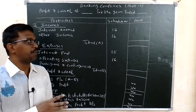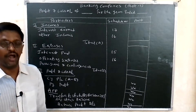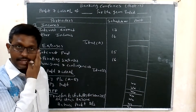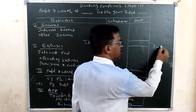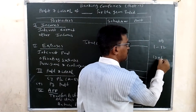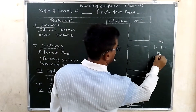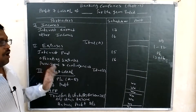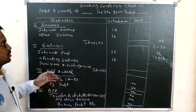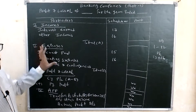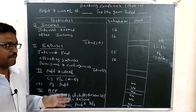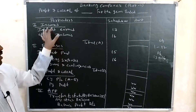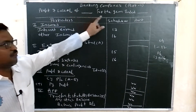For banking companies, final accounts are prepared in two parts: the profit and loss account and the balance sheet. They are presented schedule-wise. Schedule 1 to Schedule 12 is the balance sheet, and Schedule 13 to Schedule 16 is the profit and loss account. First, we will prepare the profit and loss account for banking companies.